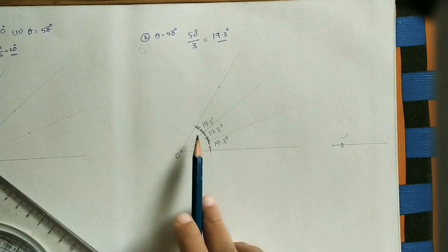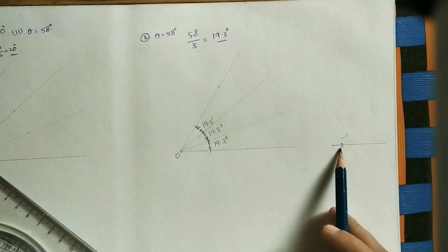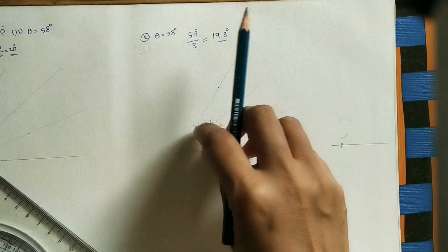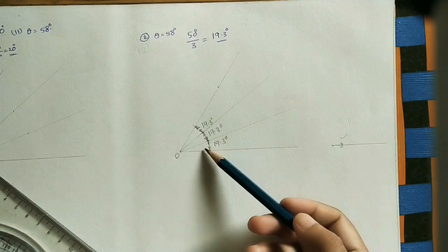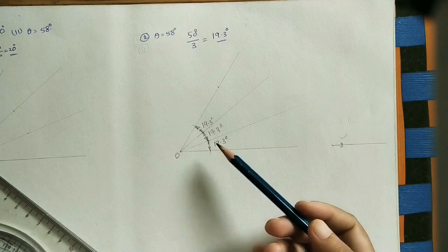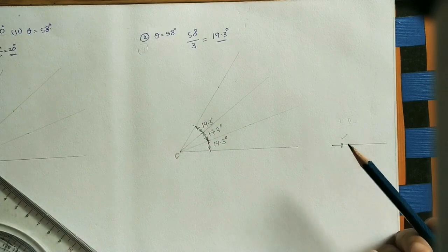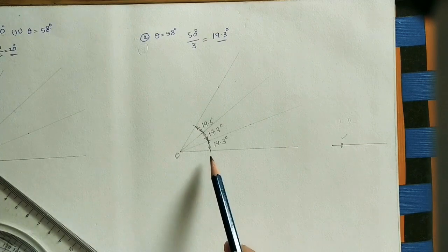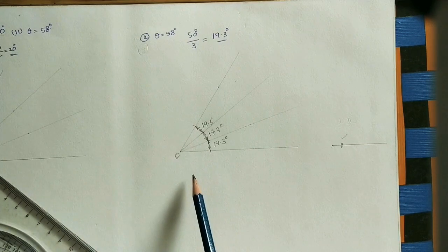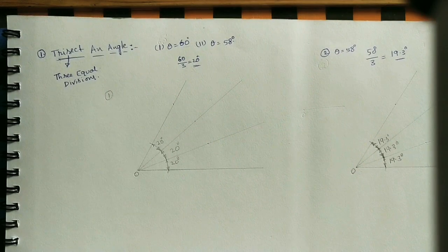If the second trial also doesn't give three equal divisions, take one more length for a third trial and divide again — that is why this method is called the trial and error method. Sometimes you get the correct value in the second trial, sometimes in the fourth trial. We use this trial and error method for marking angles that cannot be measured exactly with a protractor. These are the two methods for trisecting an angle: using the protractor directly, and using the trial and error method.